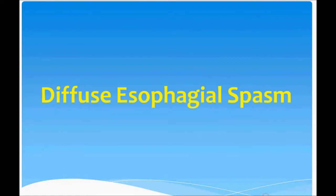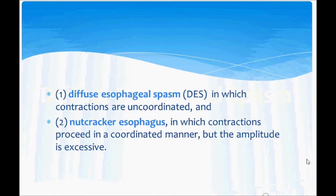Hey guys, USMLE point. Today I'm going to discuss diffuse esophageal spasm. There are two types: diffuse esophageal spasm and nutcracker esophagus. Both are very closely related to each other.